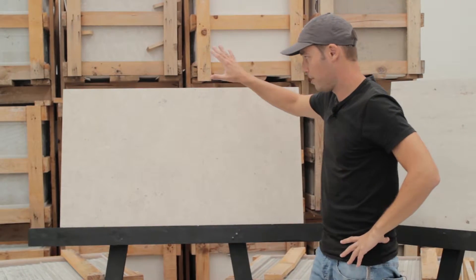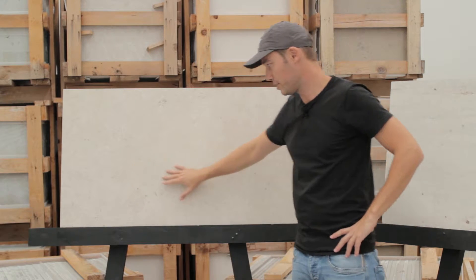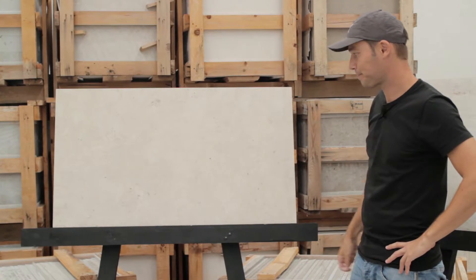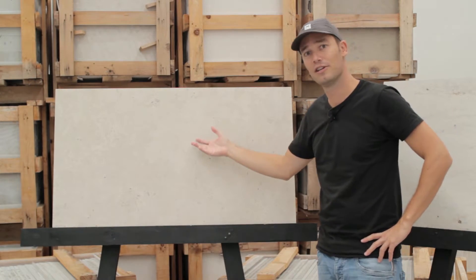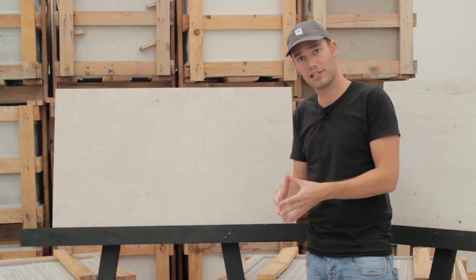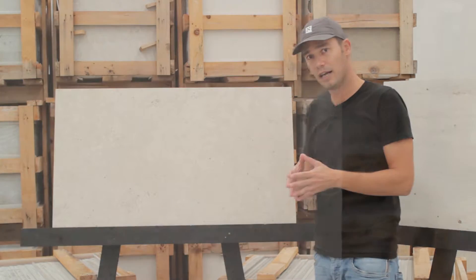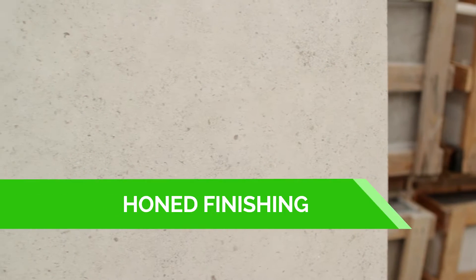On this side we have the one that is the most popular. That's why we have a big panel. This is the honed finishing. Honed finishing is a matte finishing that doesn't highlight so much the elements of the stone. This one is a beige limestone, it's a Moleanos. What you get is a very plain, pale background.